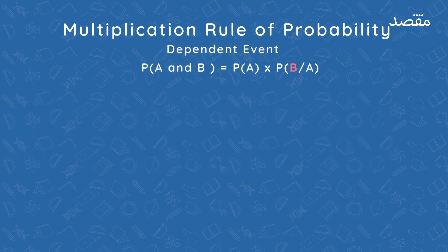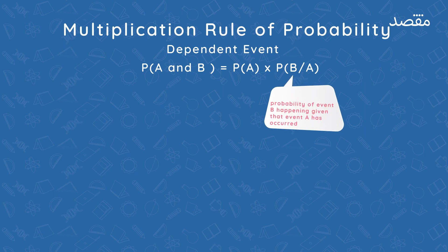What if the events are dependent? What if the second event's probability is based on the outcome of the first event? In this case, the probability of event A happening multiplied by the probability of event B happening given that A has already occurred.